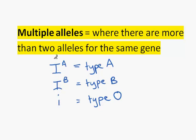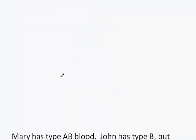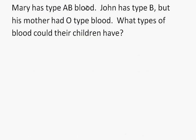Blood is a really good exam question because it couples multiple alleles with codominance between A and B types. Here is a genetics question: Mary has type AB blood. John has type B, but his mother had O type blood. What type of blood could their children have?